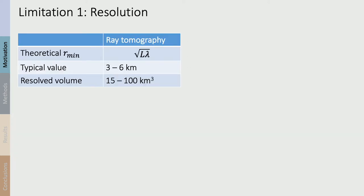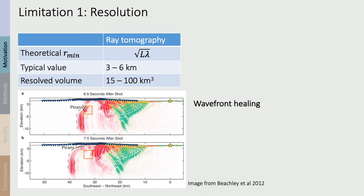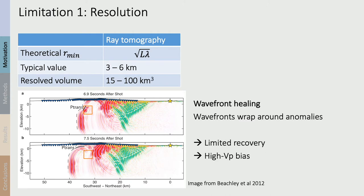This is because of two limitations. The first is the limitation on the resolution of the seismic imaging methods. For ray-based approaches, the theoretical resolution limit is given by the width of the Fresnel zone. For crustal studies, this is typically three to six kilometers. That means anomalies as large as several tens of cubic kilometers can go undetected or be very strongly smoothed, because wave fronts wrap around low-velocity anomalies and heal behind them, resulting in limited recovery of anomaly strength and a general high VP bias.